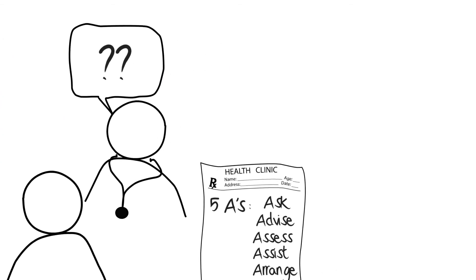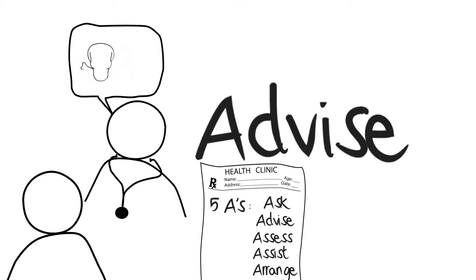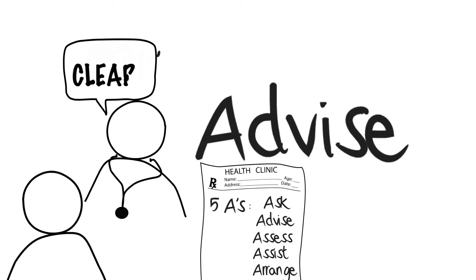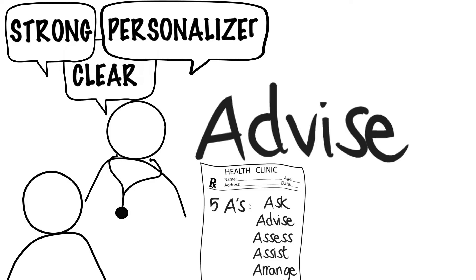The second A: Advise. If the patient indicates that they use tobacco, advise them to quit. You can relay information on the harms of tobacco use and the benefits of quitting that have been described in previous modules. Your advice should be clear, strong, and personalized to the individual patient, including using appropriate language that can be understood by the patient.